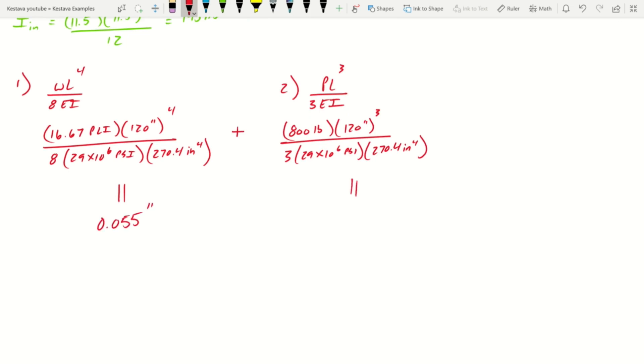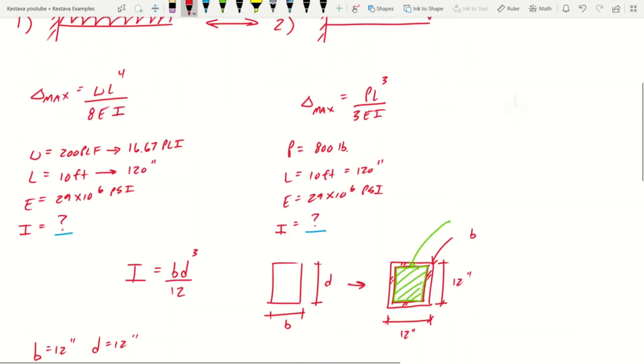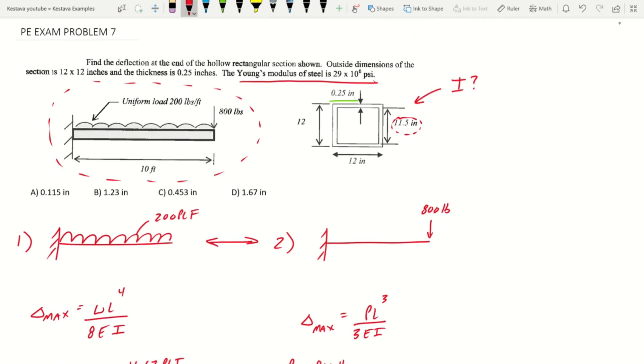And equation number two gets us 0.0587 inches. If we add those together we get the summation of deflection or our total deflection of our member, and that's going to equal 0.114 inches. And that is our answer. Let's scroll back up to the top, see what we got. 0.115 inches is answer A.